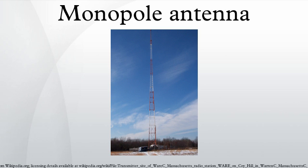This is called a ground plane antenna. At gigahertz frequencies the metal surface of a car roof or airplane body makes a good ground plane, so car cell phone antennas consist of short whips mounted on the roof, and aircraft communication antennas frequently consist of a short conductor and an aerodynamic fairing projecting from the fuselage. This is called a blade antenna. The most common antenna used in mobile phones is the inverted F antenna, which is a variant of the inverted L monopole.